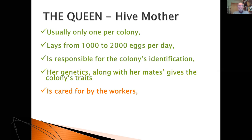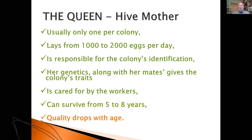The queen is cared for by the workers — she's groomed and fed by them, and she can't feed herself. She can survive from five to eight years, but her quality drops with age, usually starting around the second year. So beekeepers often change their queens every few years.